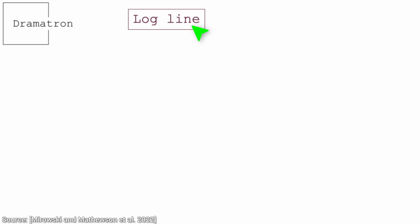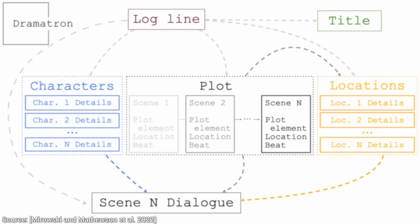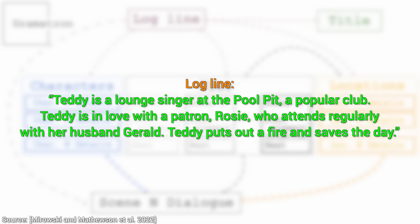Well, hold on to your papers, because out comes — can it really be? — out comes everything. The whole play. Let's have a look at an example together. Here is the user-provided logline: Teddy is a lounge singer at The Pool Pit, a popular club. Teddy is in love with a patron, Rosie, who attends regularly with her husband, Gerald. Teddy puts out a fire and saves the day. This is all we need to do, and now it generates a set of titles for us.